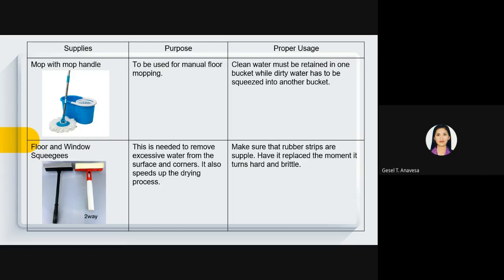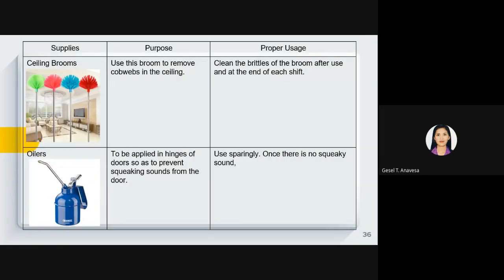The floor and window squeezer is used to remove existing water from surfaces and corners, and speeds up the drying process. Cleaning brooms are used to remove cobwebs from ceilings. Clean the bristles of the broom after each shift and store it properly. Oilers are applied to door hinges to prevent squeaking sounds, especially for accommodations near the sea where rust builds up quickly due to strong winds — this minimizes noise from doors.